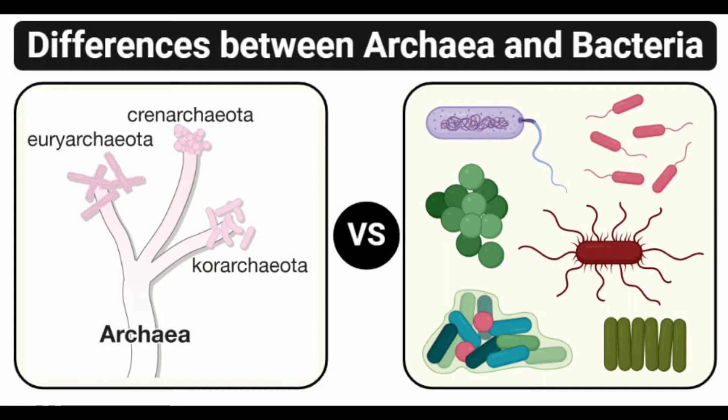Glucose oxidation: Archaea do not use glycolysis or the Krebs cycle for glucose oxidation but follow metabolic pathways similar to them. Glycolysis and the Krebs cycle are important metabolic pathways in bacteria for glucose oxidation.